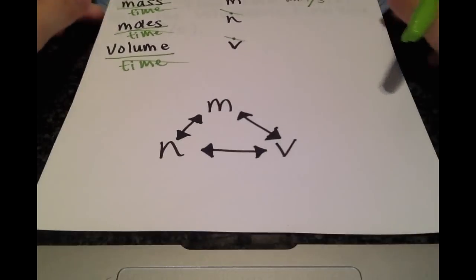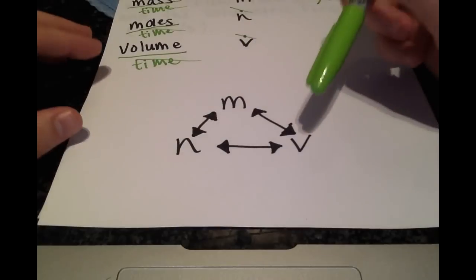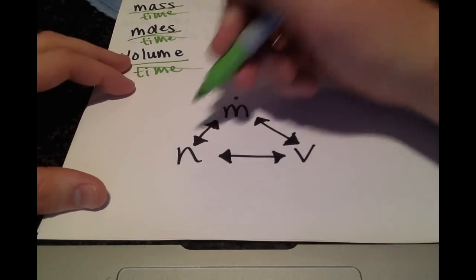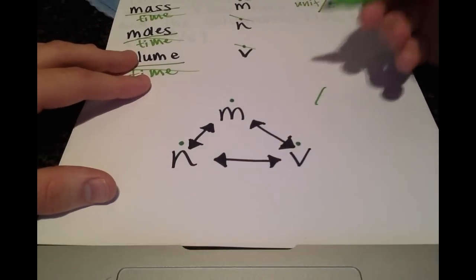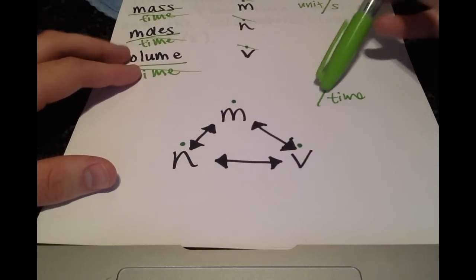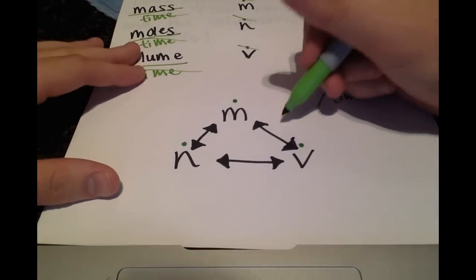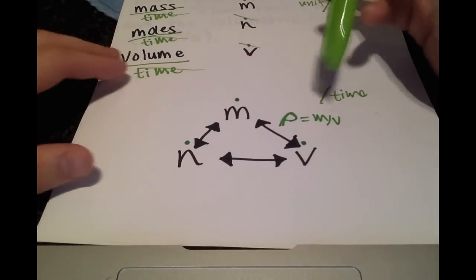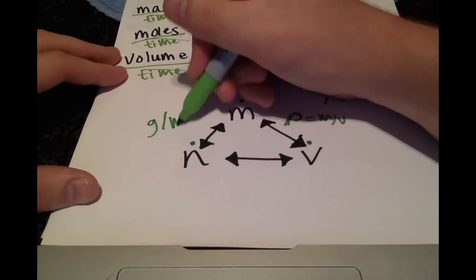So just as we saw how we can convert between mass, moles, and volume, we can do the same exact thing with these when we have the flow rate. The only thing is that we're carrying along the division of time between each of these. Between mass and volume, we use density because that's mass over volume. And between mass and moles, we use the molar mass, which is grams per mole.